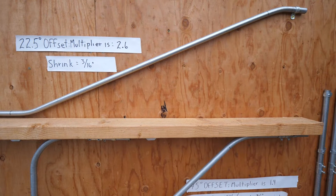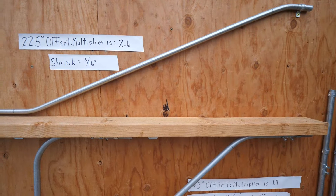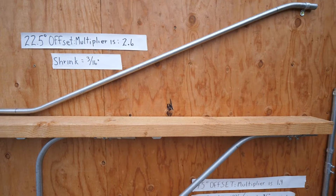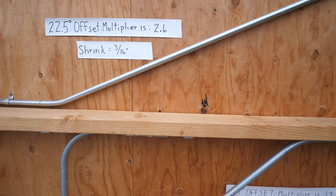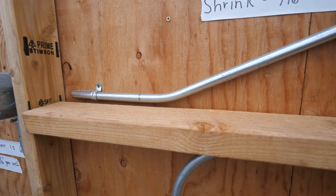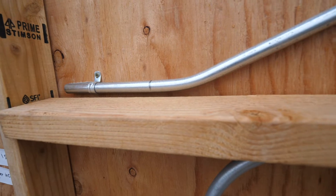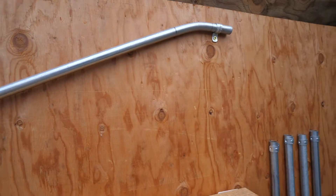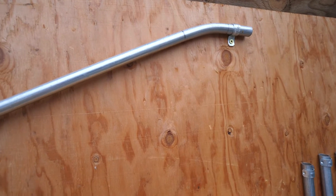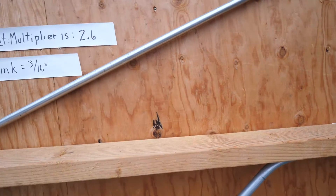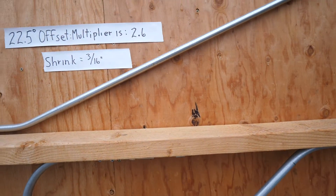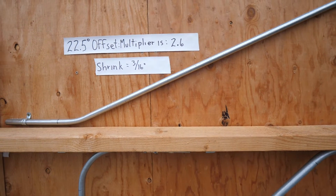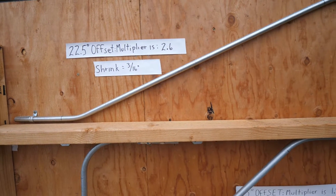Here's an example of a 22½-degree offset bend. The multiplier is 2.6, so that's how I was able to find the distance between these two marks where you make the bends — there's one mark, and there's another mark up here. The shrink for this bend is 3/16 of an inch.